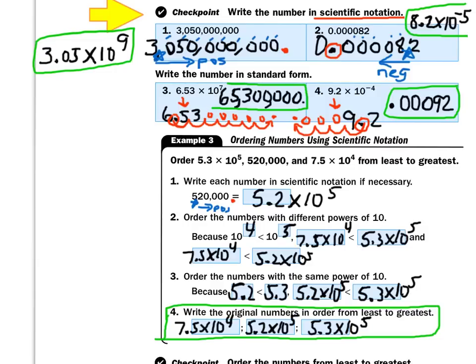You should try the checkpoint before listening to my explanation. Write the number 3,050,000,000. With my red I added the decimal at the end. With my blue I placed the star to create a number between $1 and $9.99. Then I imagined I was Katniss, standing on the star shooting an arrow to pop the red balloon — the arrow goes in the positive direction. I counted every digit between the star and the decimal: 1, 2, 3, 4, 5, 6, 7, 8, 9. So in scientific notation that's 3.05 times 10 to the 9th power.